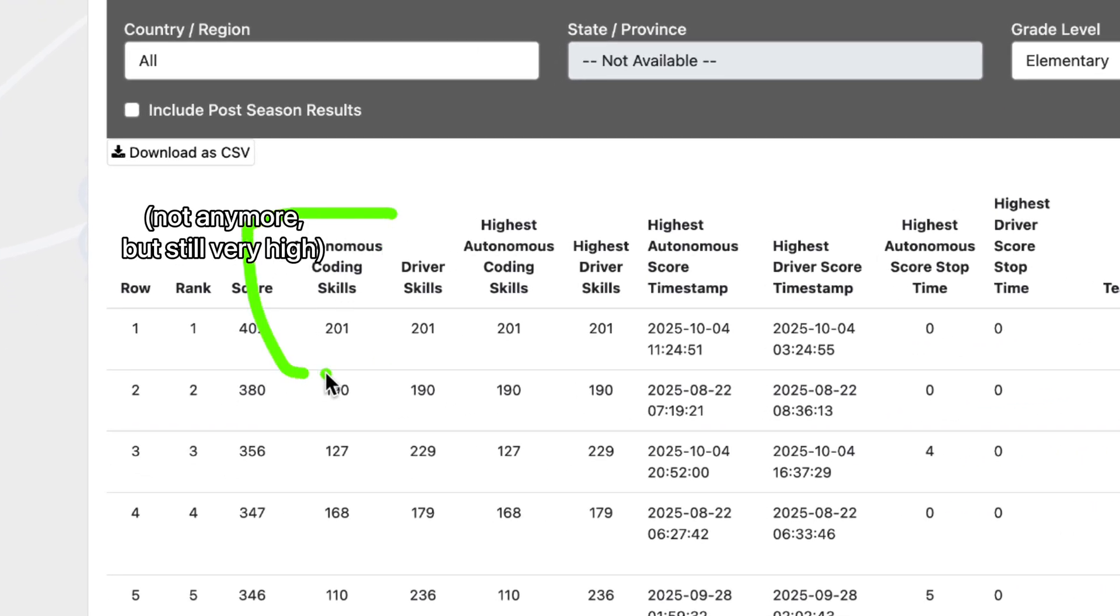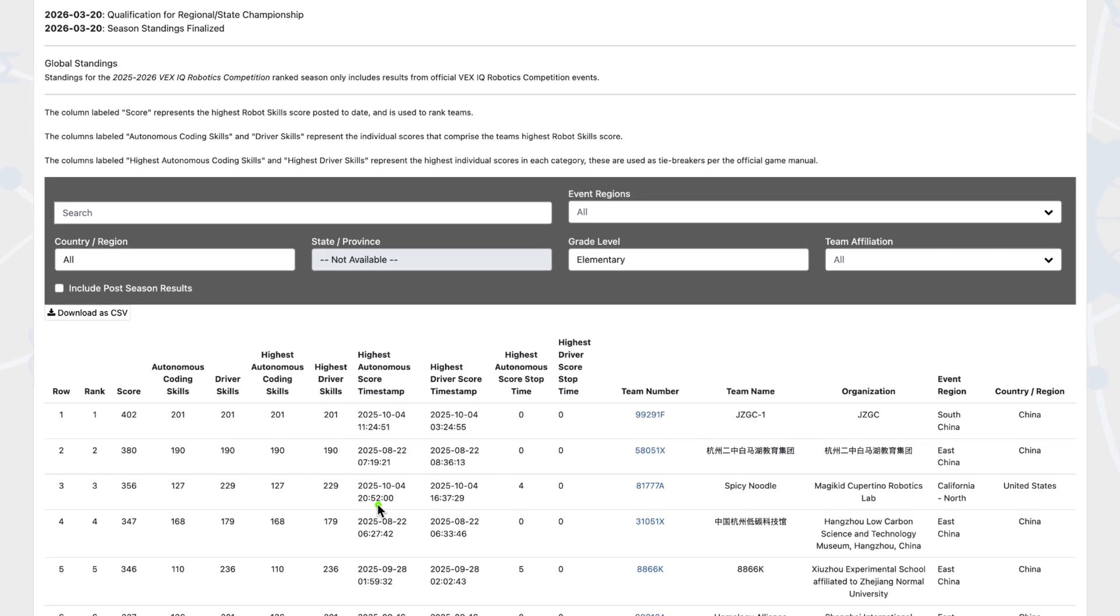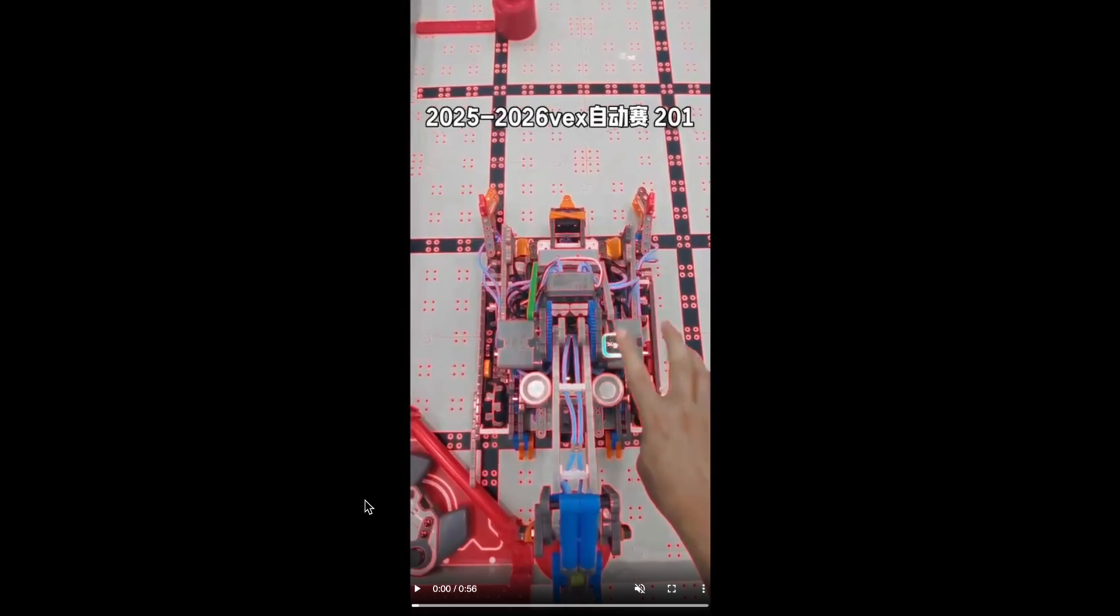As you can see here, the autonomous coding skills 201 and the driving skills of LOS 201. I'm not entirely sure if this video is from the same person who set the record, but both teams are from China. I'm a bit sick, so my voice might sound weird in this video.